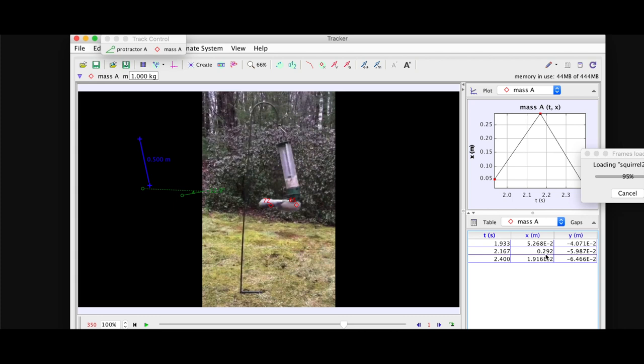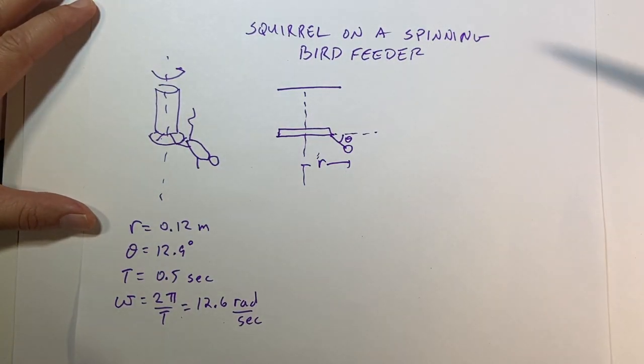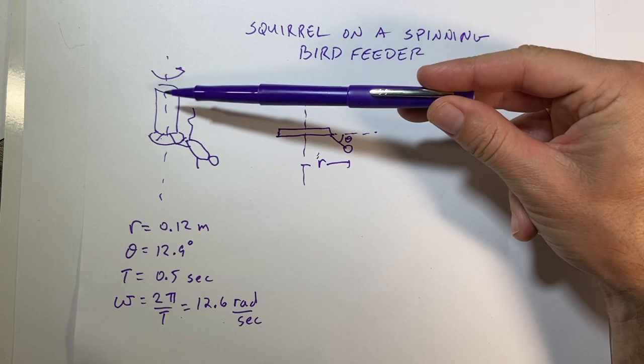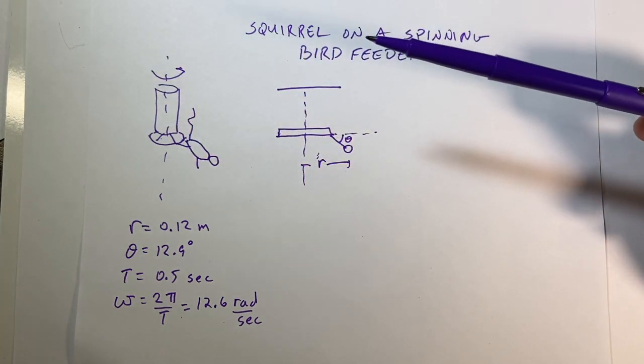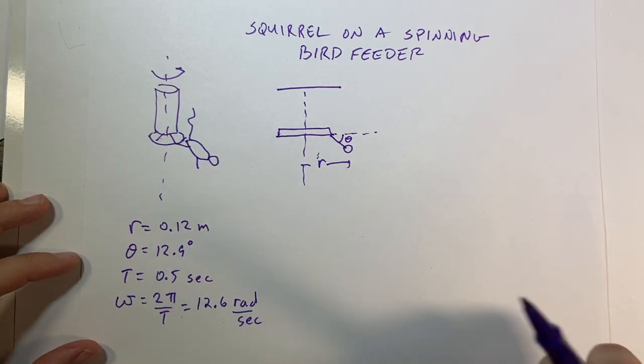Okay, so I got the time so I can get the angular frequency. I got the angle. I got the radius. So let's start doing some physics equations. I'm going to switch over to paper and let's see what happens and see what we can figure out. Okay, so here we have the situation. I kind of redrew it right here in my rough sketch. There's the bird feeder, there's the squirrel and spinning around that way. But one of the things that we do in physics is to kind of make a simplified version.